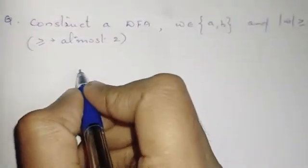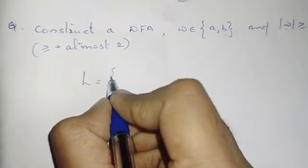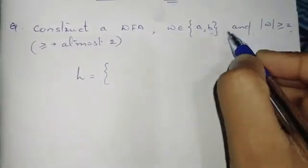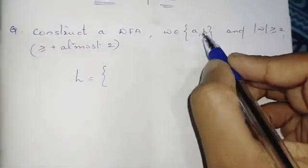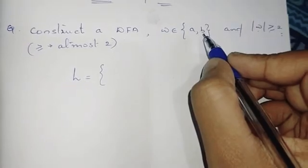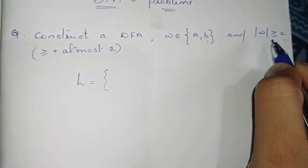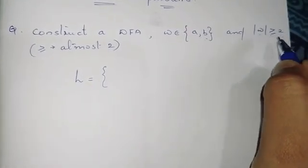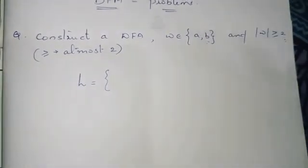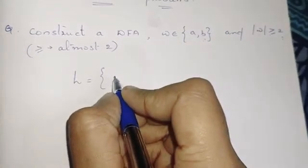First, we look at the language. Here we have a set of all strings over {A, B}. If we have a limit where the length of a string is equal to 2, we have specific string combinations.